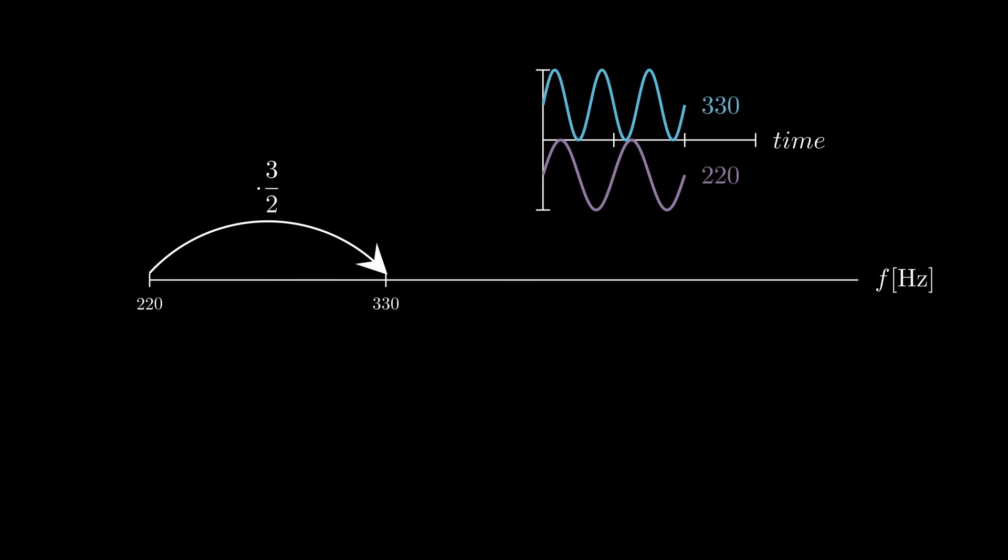People realized early there are a few notes that sound particularly good together. If we look at our starting note, the sound wave oscillates 220 times per second. And our second note that sounded so good, it has 330 Hz. We see that the relation of the frequencies are a fraction of two small whole numbers. What do I mean by that? If we plot those waves, we can see the second note makes three oscillations in the same time our first note makes two. That's why the ratio between them is 3 over 2.